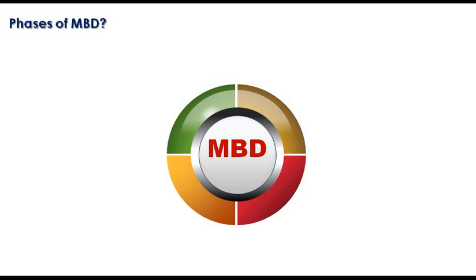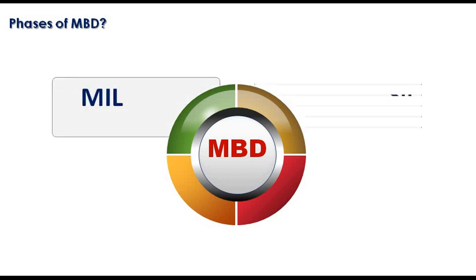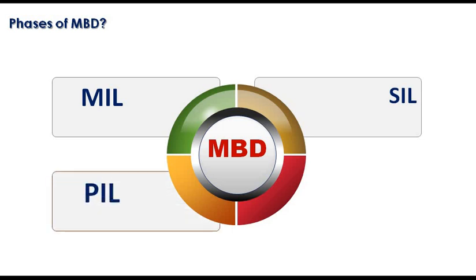Let us see what are the phases of model-based design technique. There are four different phases: MIL, that is Model In-Loop; SIL, Software In-Loop; PIL, Processor In-Loop; and HIL, Hardware In-Loop. Let us see what each of these are.